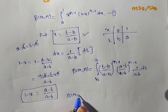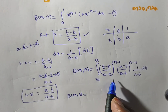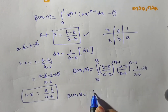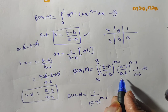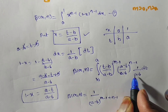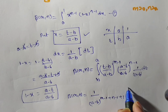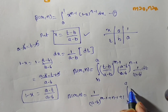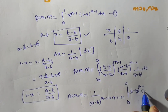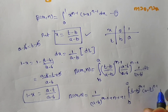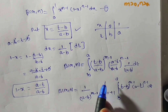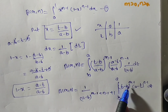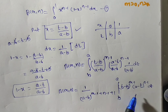Now simplify this. Beta of m comma n equals — writing the constants outside — 1 by (a minus b) to the power (m minus 1) plus (n minus 1) plus 1, times integral from b to a of (t minus b) to the power m minus 1 times (a minus t) to the power n minus 1 dt.